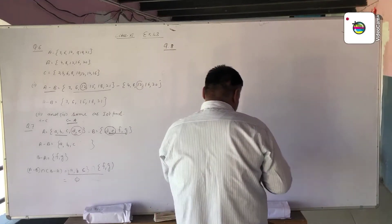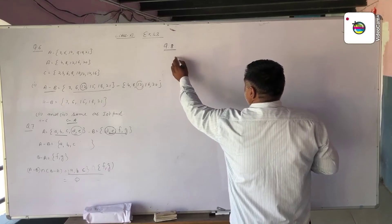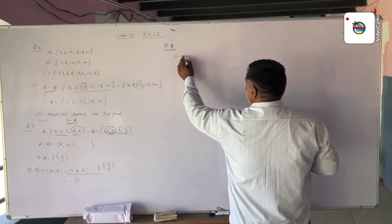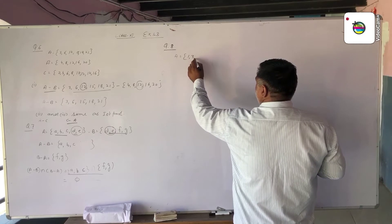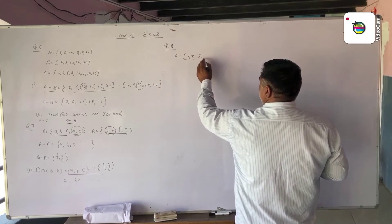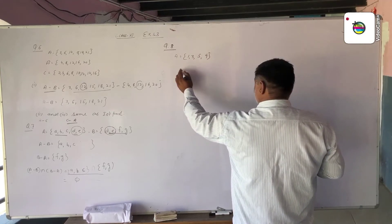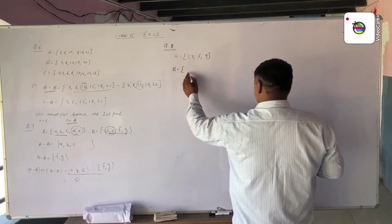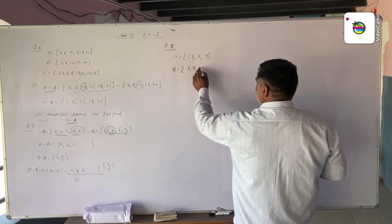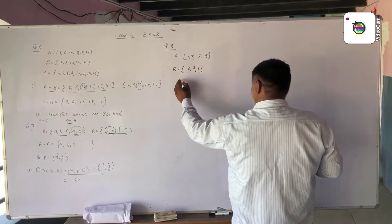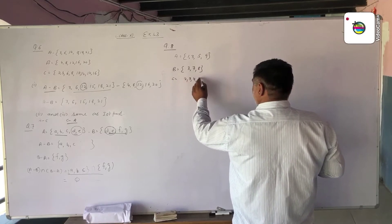Now question number 8. Set A is given by 1, 3, 5, 9. Set B elements are 3, 7, 8. And C elements are 2, 3, 4, 8.